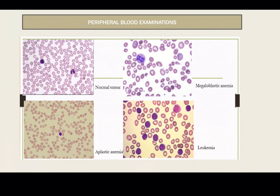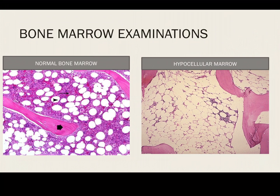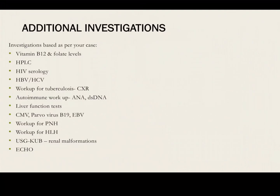The peripheral smear helps narrow differentials further: hypersegmented neutrophils are seen in megaloblastic anemia, decreased cell lines in aplastic anemia, and abnormal blast cells suggest leukemia. Bone marrow examination is crucial in pancytopenia to determine whether the marrow is hypercellular or hypocellular. Additional testing includes vitamin B12 and folate levels, HPLC, HIV, hepatitis B and C serology, TB workup, autoimmune workup, LFTs, and infectious workup for CMV, parvovirus, and Epstein-Barr virus. Workup for PNH and HLH should also be done.